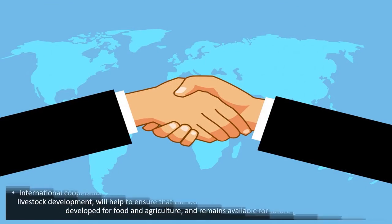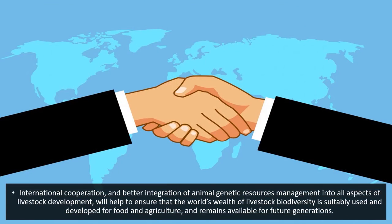It is important that the distinct characteristics of agricultural biodiversity — created largely through human intervention and requiring continuous active human management — are taken into account in the development of such frameworks. International cooperation and better integration of animal genetic resource management into all aspects of livestock development will help ensure that the world's wealth of livestock biodiversity is sustainably used and developed for food and agriculture.